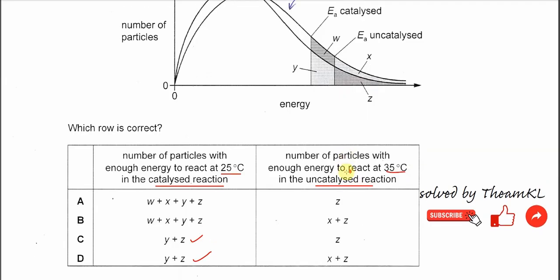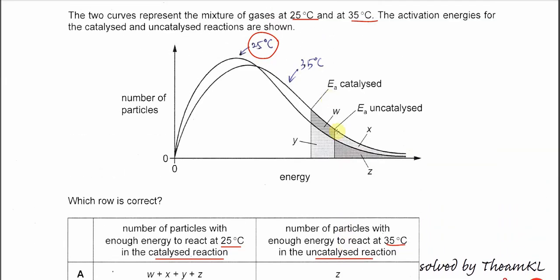The number of particles with enough energy to react at 35 degrees C in the uncatalyzed reaction. Okay, uncatalyzed reaction, then we need to focus from this part onwards, this energy onwards. It's the uncatalyzed reaction.